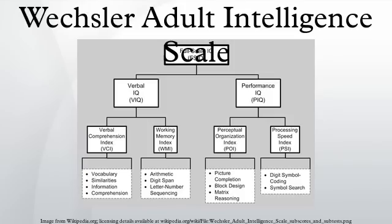The WAIS-R, a revised form of the WAIS, was released in 1981 and consisted of six verbal and five performance subtests. The verbal tests were: information, comprehension, arithmetic, digit span, similarities, and vocabulary. The performance subtests were: picture arrangement, picture completion, block design, object assembly, and digit symbol. A verbal IQ, performance IQ and full-scale IQ were obtained. This revised edition did not provide new validity data, but used the data from the original WAIS.